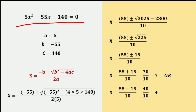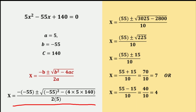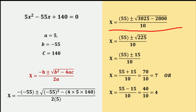Similarly, let us consider another numerical example: 5x² − 55x + 140 = 0. Here a = 5, b = −55, and c = 140. Substituting into the quadratic formula: x = −(−55) ± √((−55)² − 4·5·140) / (2·5), which gives x = 55 ± √(3025 − 2800) / 10.